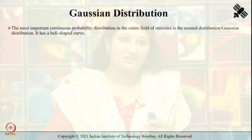Now let us try to understand more about a third kind of filter known as Gaussian filter. We are all well aware that in the field of statistics the most important continuous probability distribution is that of the normal distribution or Gaussian distribution, which has a bell-shaped curve.